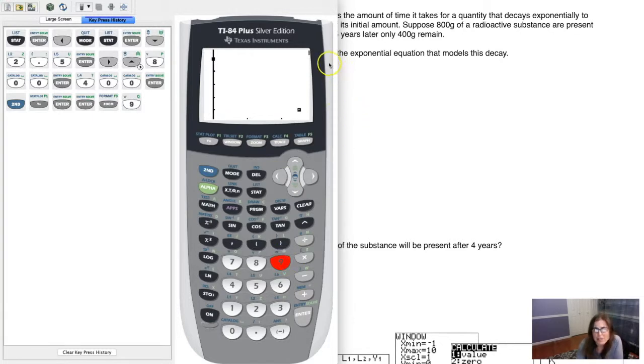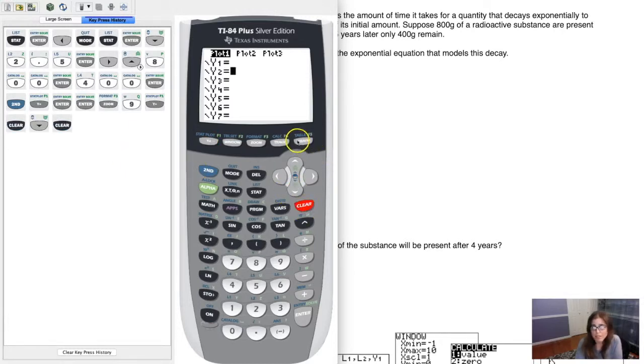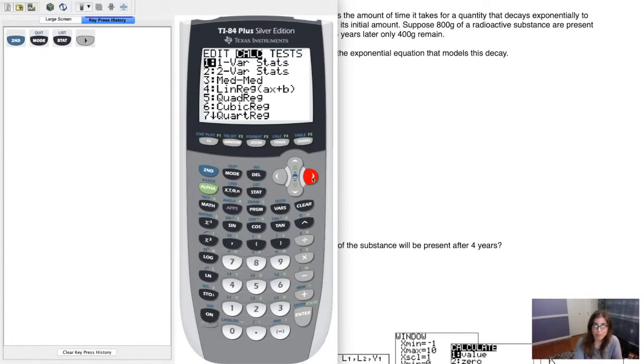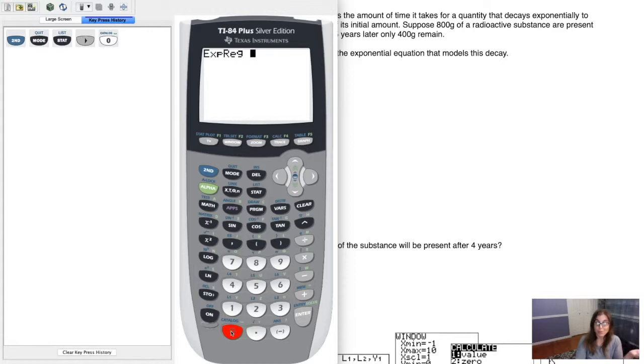On our y values, we had 800 and then 400. Now if I want to make a scatter plot, I can. Right now I have all of my plots off. I'll just turn one of them on. Let me hit zoom 9. I can see my calculator thinking up here. That's usually a pretty good indicator that I've left something in my y equals. Yeah, there they are. I forgot to clear it out. Right now, it could look linear for all we know, but I'm going to try and fit an exponential decaying model into it.